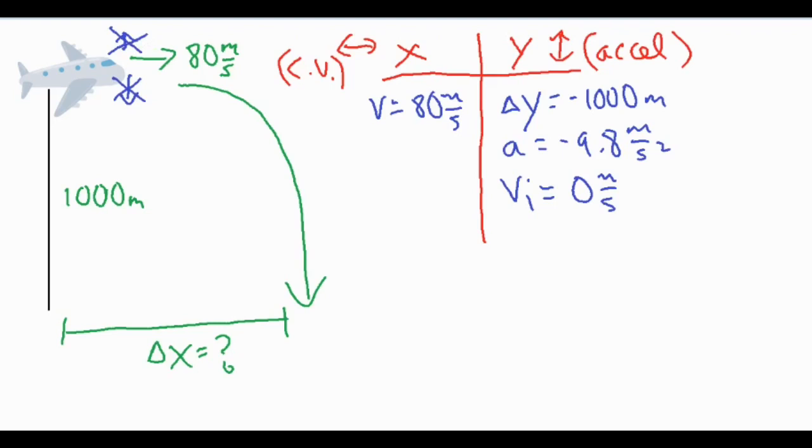Now, it looks like we have a lot more to work with on the y side, which we definitely do. And then we want to use that information to eventually solve for delta x on this side. Now on the left hand side, we only have one formula we can use, which is delta x over t equals v.